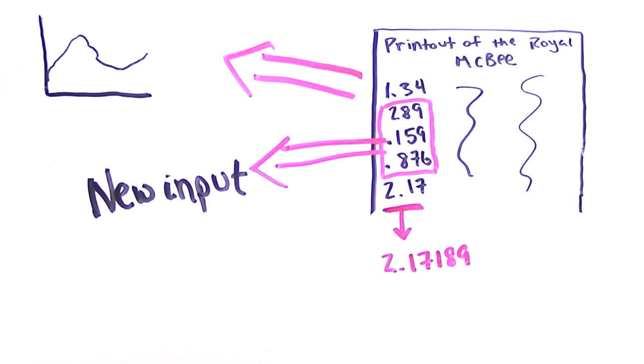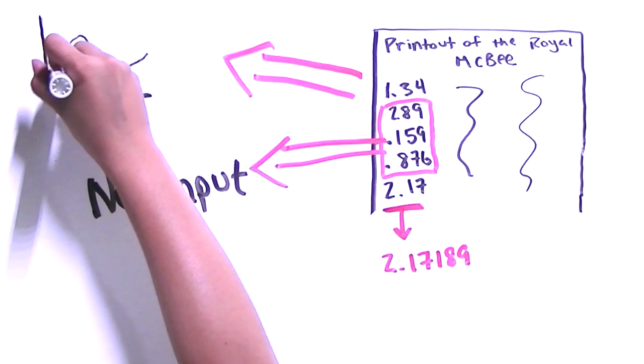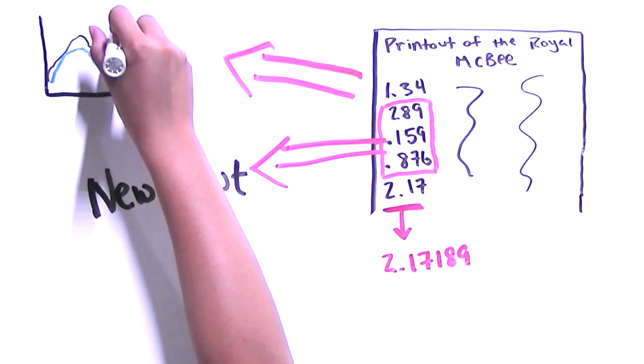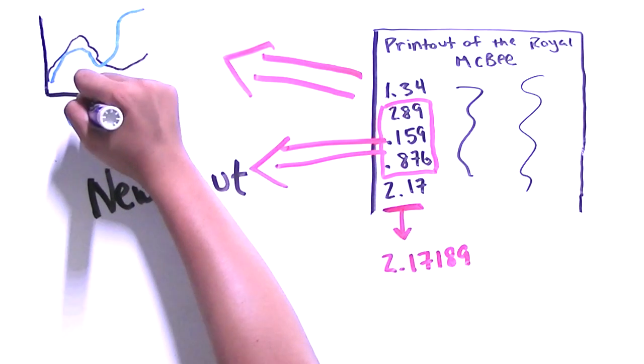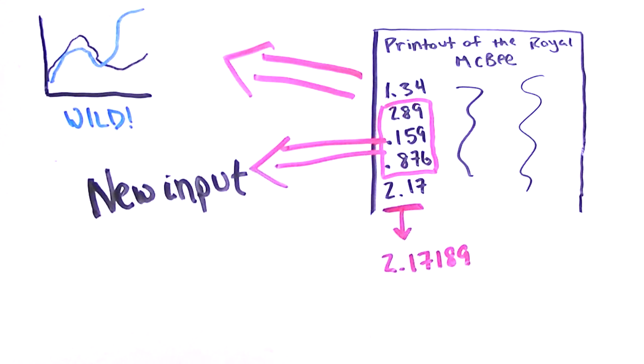The results with the new numbers should have exactly matched the results from before. However, within an hour, the results began to vary wildly. So what caused this change to occur? The butterfly effect.